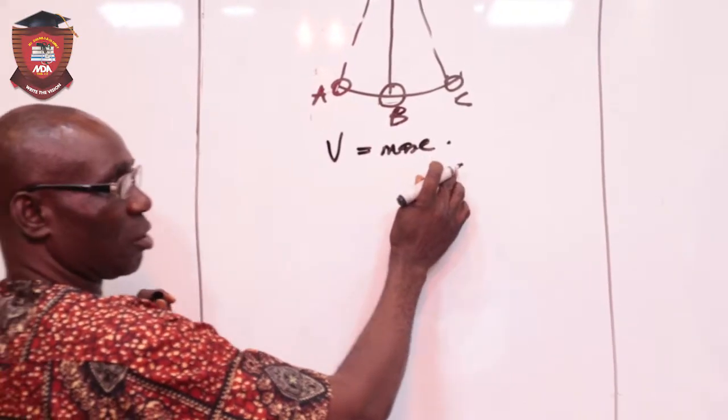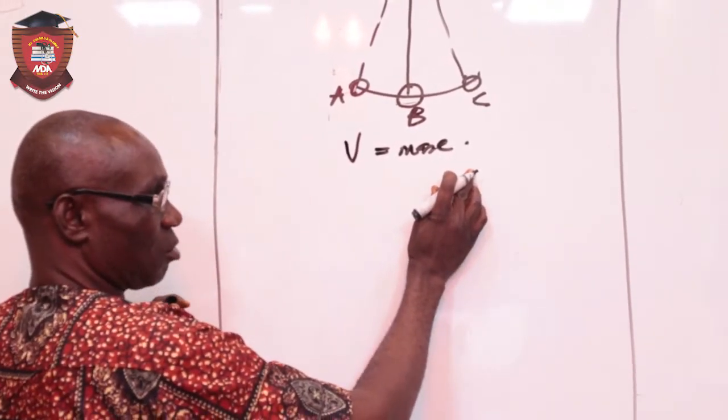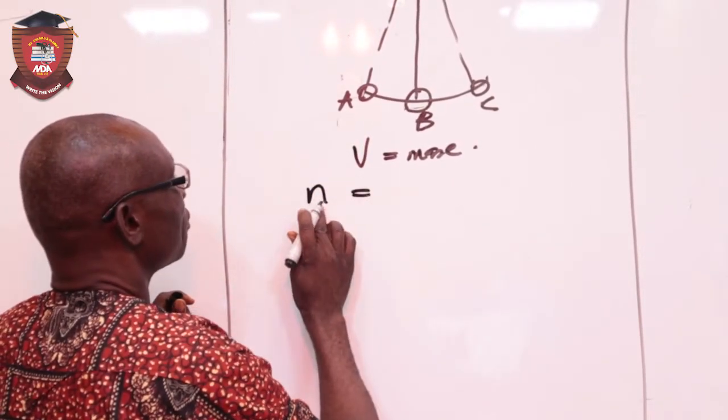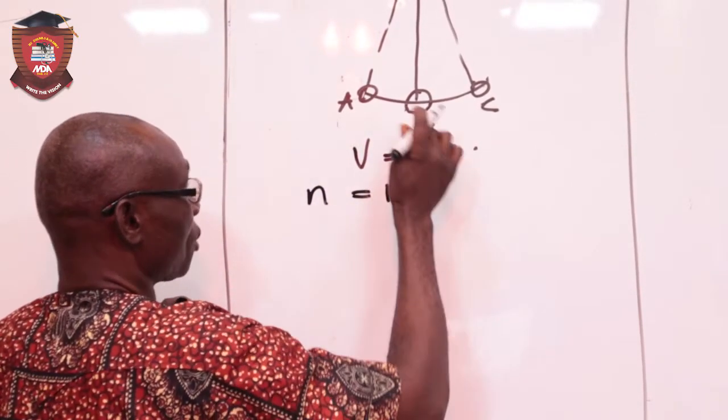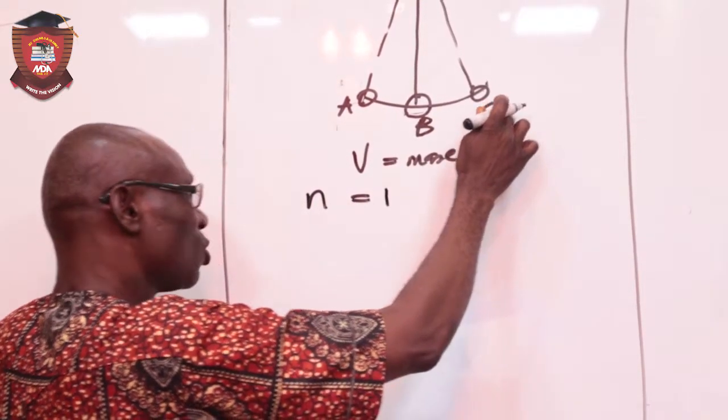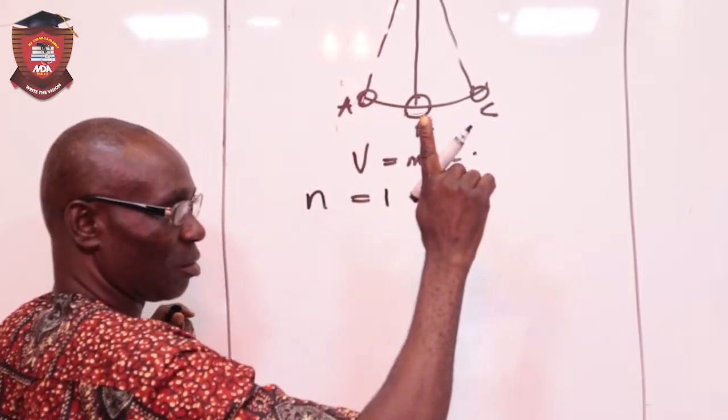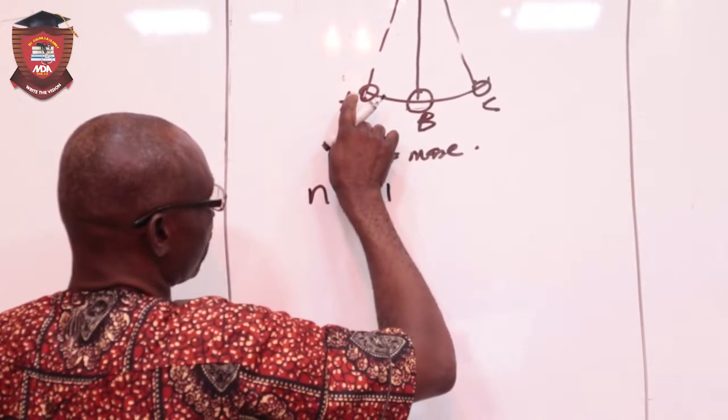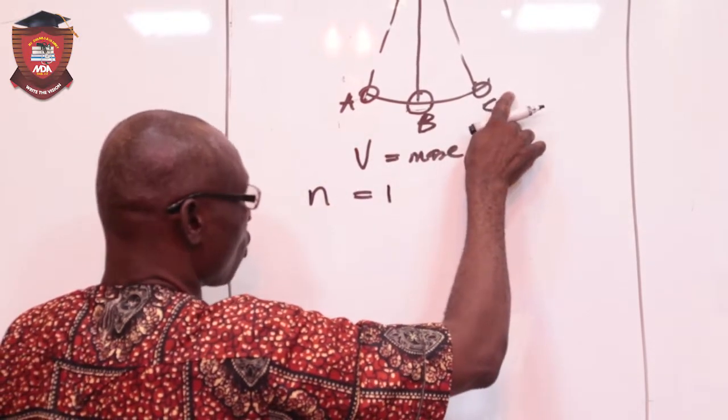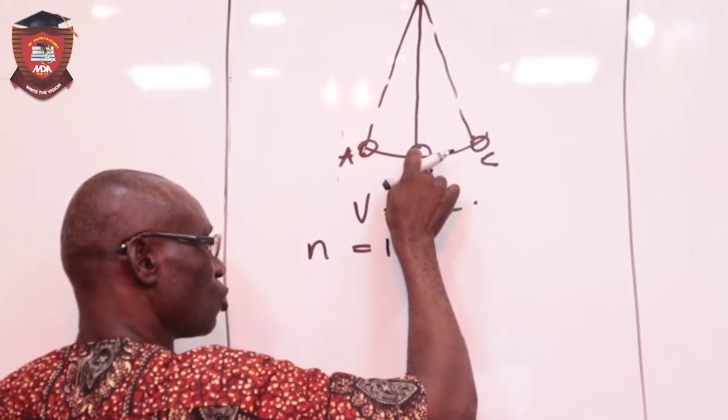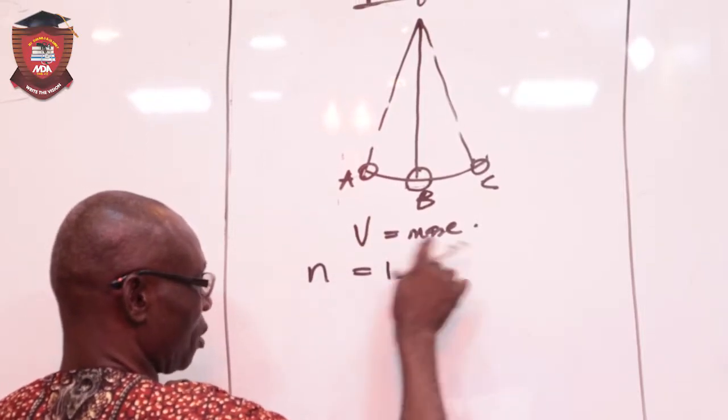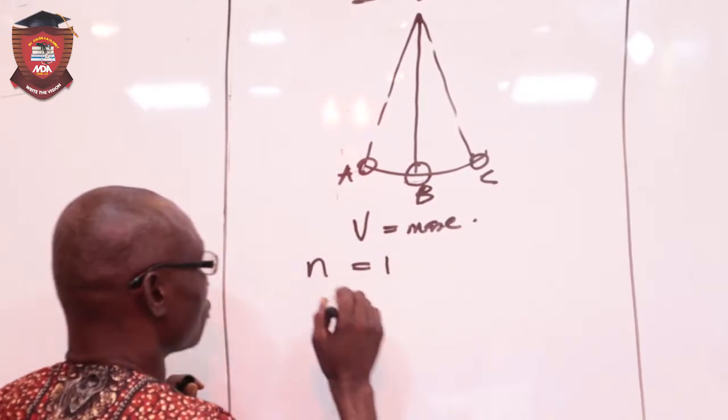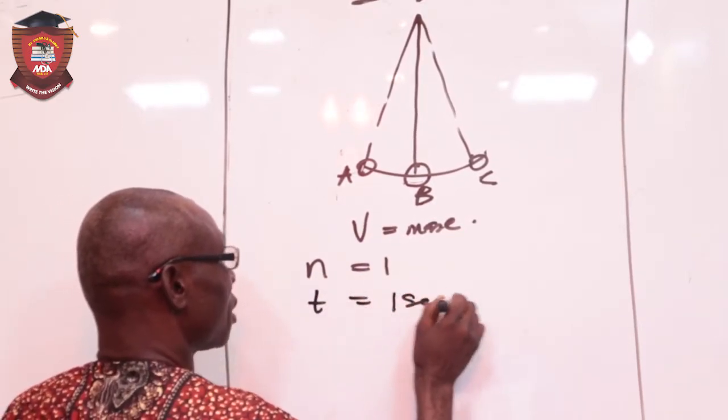So, for me to answer the question, I'll first look at the information here. It says it passes twice. That means number of oscillation is one. Because from A to C, and C to A, it's one. One oscillation. There's no way you count an oscillation when it moves from A to C. No. It has not passed twice, this position, where V is maximum. So, n now in this question is one. Then he said one second. That means time taken is one second.